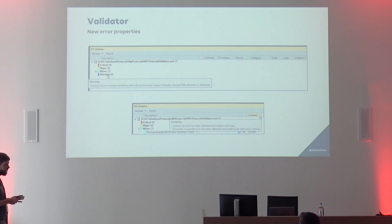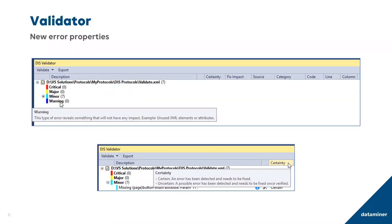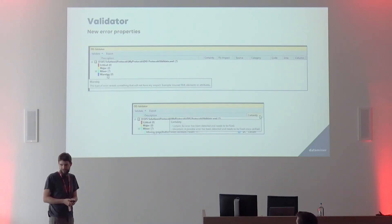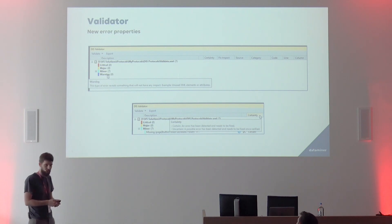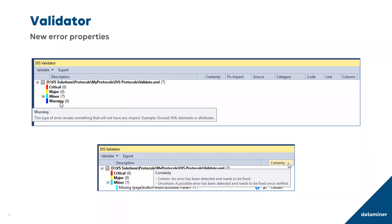Warning means no impact at all — for example, a mistyped tag that Data Miner won't recognize, so it's just a useless tag. You might want to check if you intended something else or remove it. An extra column added is 'certainty' — can we programmatically be 100% sure what you've done is an error? If certain, we flag it as certain; otherwise uncertain, meaning we think it's very likely a mistake and want you to double-check.